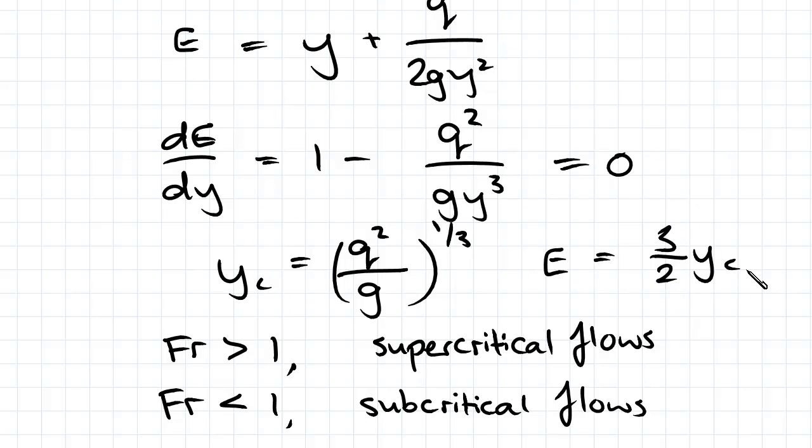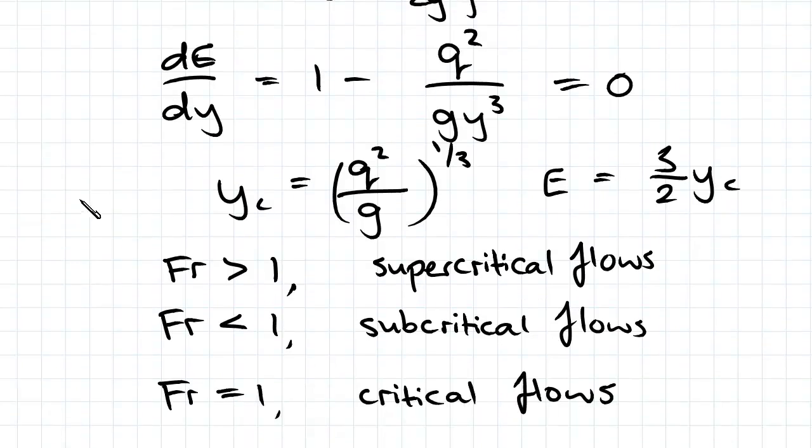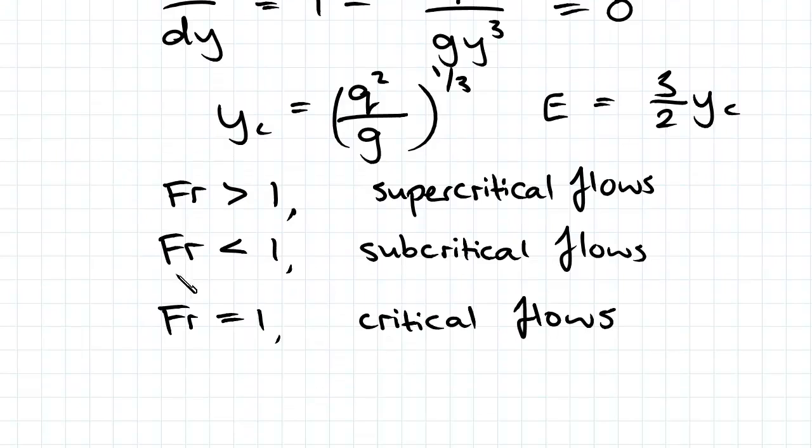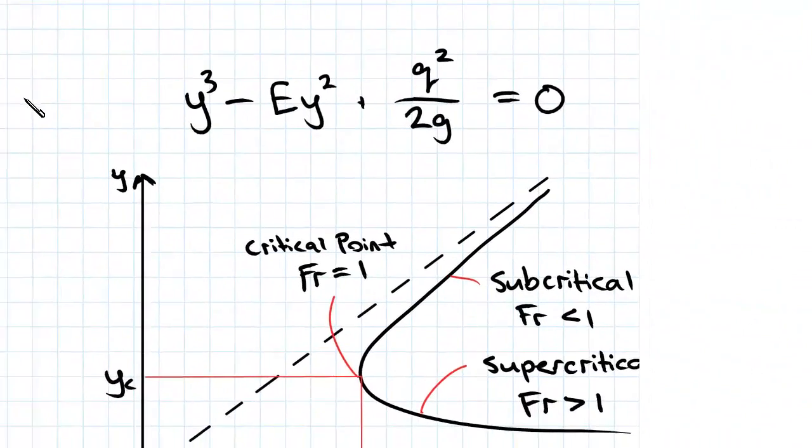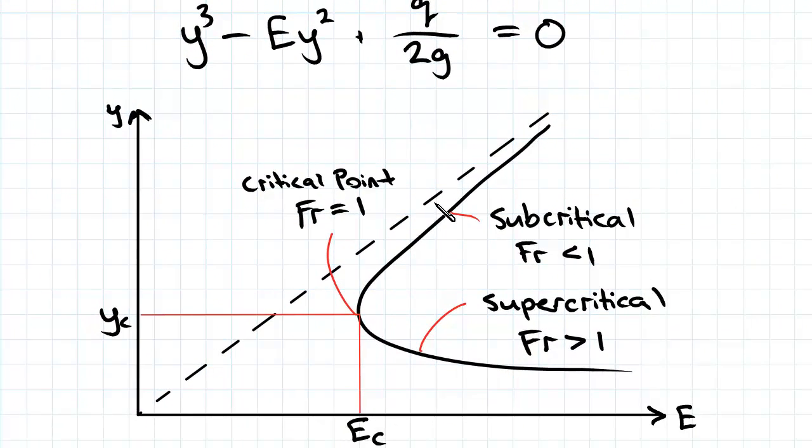So we have the formulas to find the critical point at yc, Ec. Now we can classify the rest of the points of the curve into the subcritical and supercritical flows. As it turns out, the upper branch of the curve here is subcritical and the lower branch is supercritical. That's slightly counterintuitive, so remember which one is which.